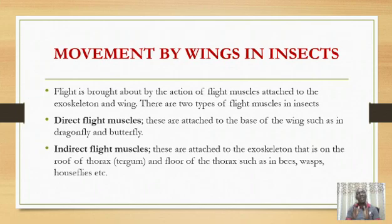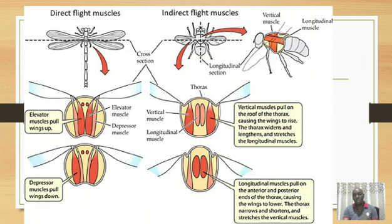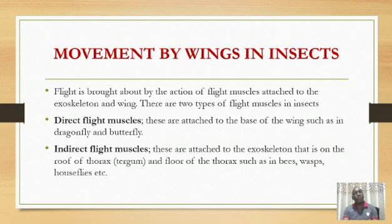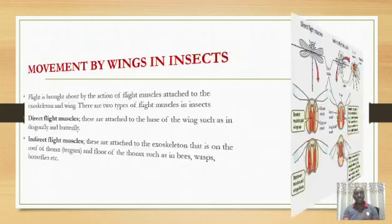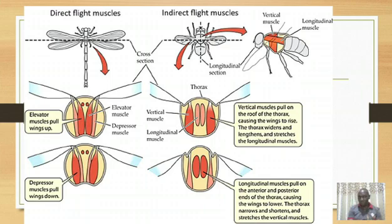Direct flight muscles are attached to the base of the wing directly — for example in butterflies and dragonflies. While indirect flight muscles are attached to the roof of the thorax, which we are calling the tergum, and are not attached to the wings. Hence the term indirect flight muscles. Hope we can now tell the difference between direct flight muscles and indirect flight muscles.